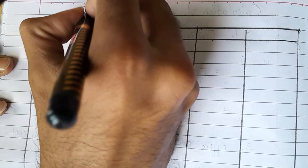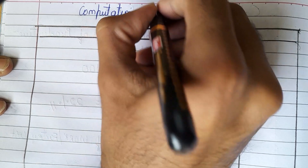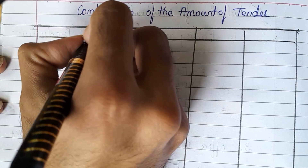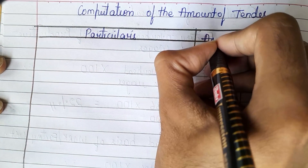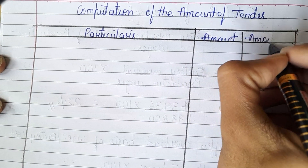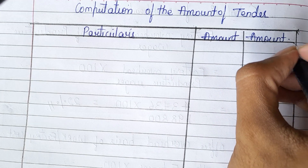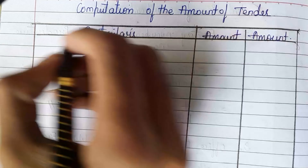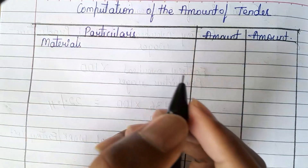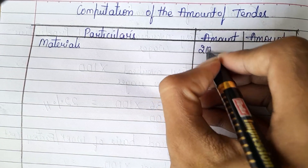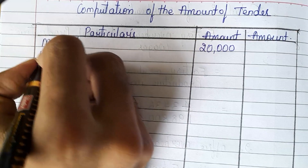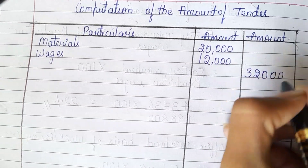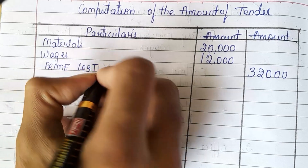Using these two percentages, we need to prepare a tender. On top write: computation of the amount of tender. Write particulars and amount column. The material required in the adjustment is 20,000 worth of materials and wages required is 12,000. Adding 20,000 and 12,000 gives 32,000, which is our prime cost.